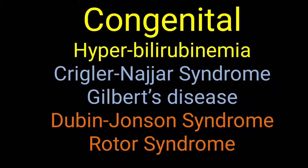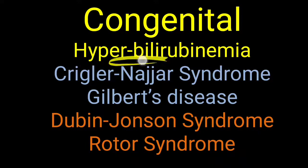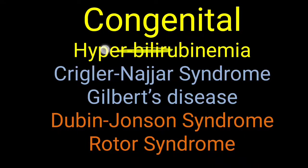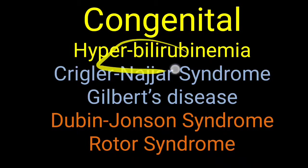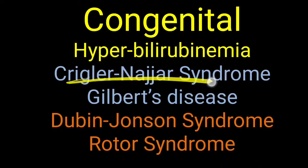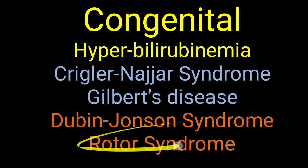Hello friends, today's topic is about congenital hyperbilirubinemia. Hyperbilirubinemia means increased level of bilirubin, more than 1 mg per deciliter. Some inherited defect in an enzyme or protein involved in bilirubin metabolism leads to congenital hyperbilirubinemia. The most important types are Crigler-Najjar, Gilbert, Dubin-Johnson, and Rotor syndrome.